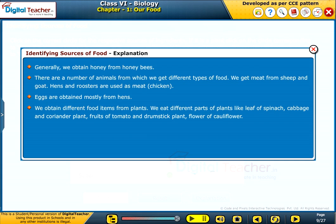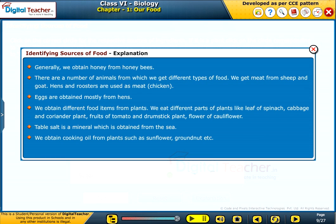We obtain different food items from plants. We eat different parts of plants like leaf of spinach, cabbage and coriander plant, fruits of tomato and drumstick plant, flower of cauliflower. Table salt is a mineral which is obtained from the sea. We obtain cooking oil from plants such as sunflower, groundnut, etc. We obtain sugar from the stem of the sugarcane plant.